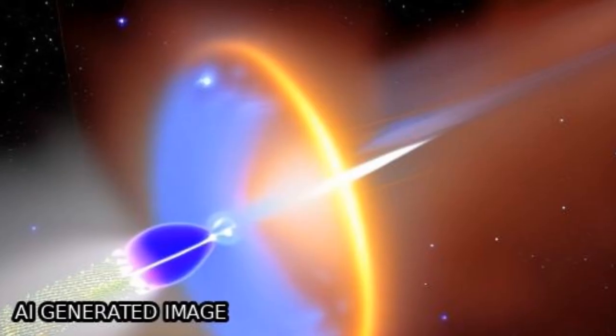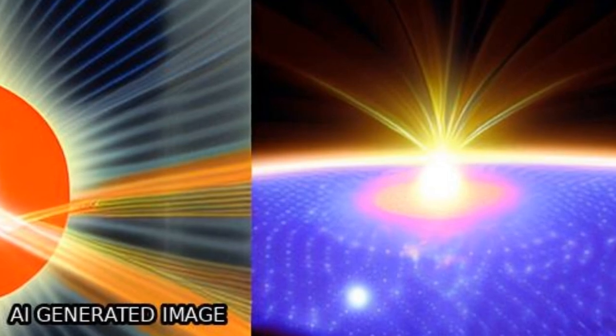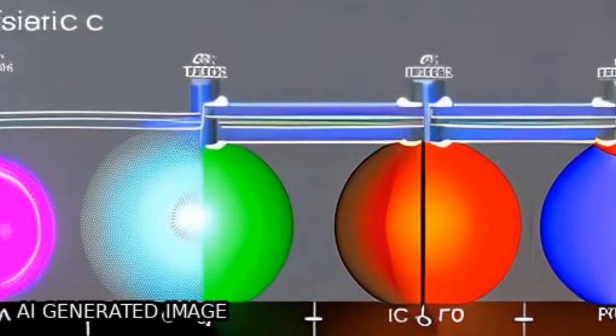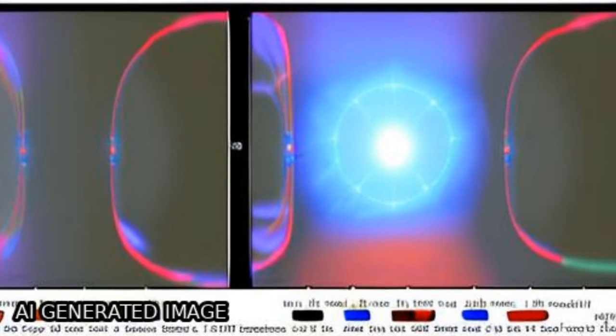The Cluster Ion Spectrometry (CIS) experiment on the four-cluster spacecraft measures the full three-dimensional ion distribution of major magnetospheric ions from thermal energies to about 40 keV/E using two different instruments.